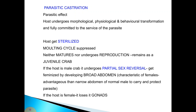The parasite is castrating or sterilizing the host; its molting cycle is suppressed and it neither matures nor undergoes reproduction, remaining as a juvenile crab. This is known as parasitic castration. If the host is a male crab, it undergoes partial sex reversal, becoming feminized by developing a broad abdomen.